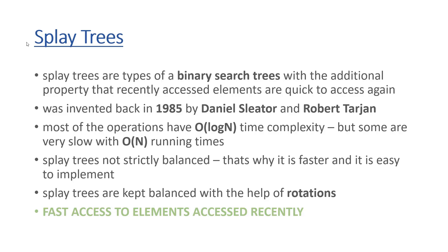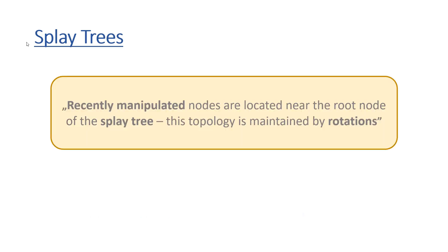Splay trees rely heavily on rotations, as we have seen with AVL trees and red-black trees. What is crucial is that splay trees have extremely fast access to items that we have accessed recently — this is the main feature of splay trees. Recently manipulated nodes and items are located near the root node of the splay tree, and this topology is maintained by rotations. Every time we search for a given item, we make sure with the help of rotations that this item will become the root node of the tree-like structure.